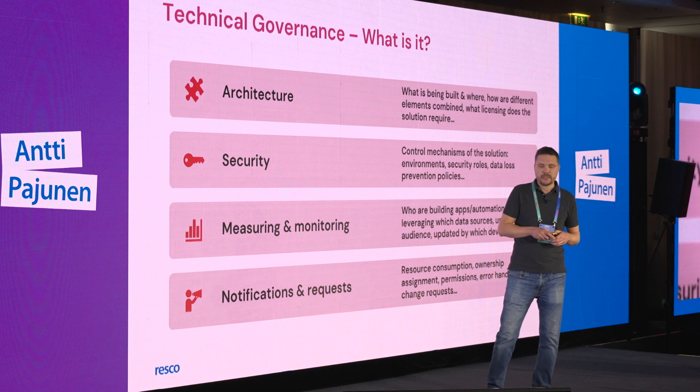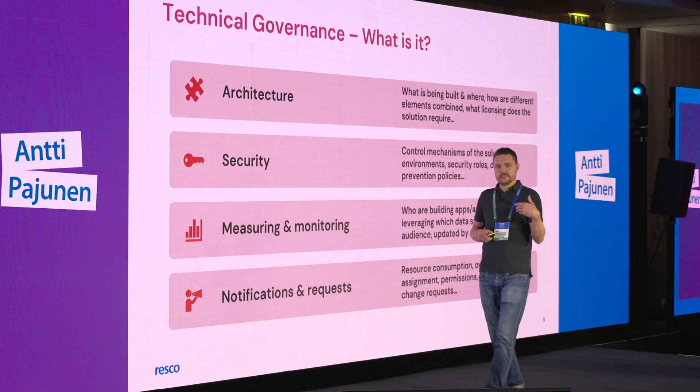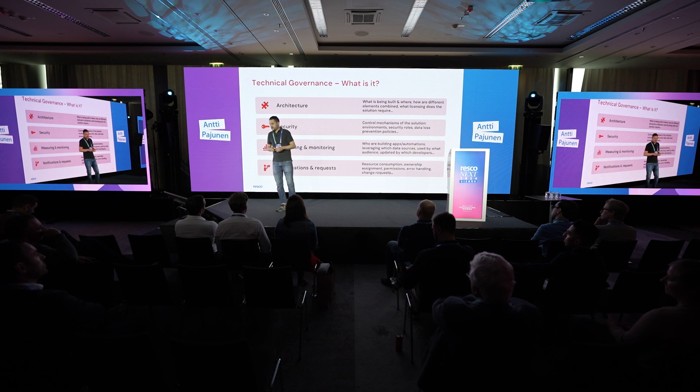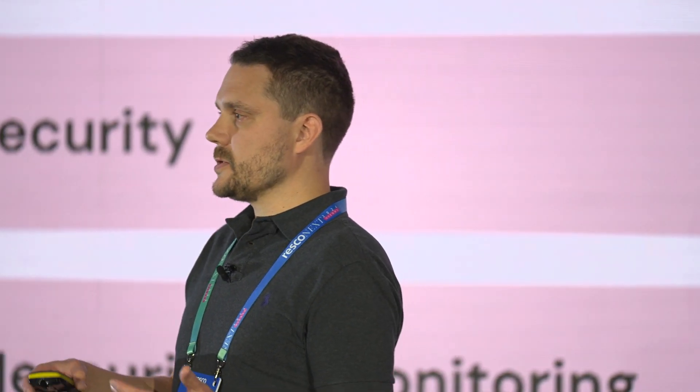Measuring, monitoring, notifications, and requests kind of branch out to that organizational governance side because there are a lot of processes behind this. If our automations fail, what should we do? How do we catch those failures and fix things before our end users reach out saying something's broken? How do we understand resource consumption? Where is our platform at? Are we utilizing our licenses? If we have a thousand Power Apps licenses, are our users actually using those licenses when citizen developers are building their solutions?